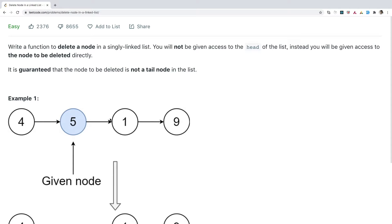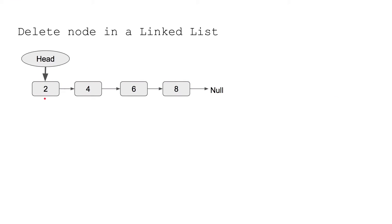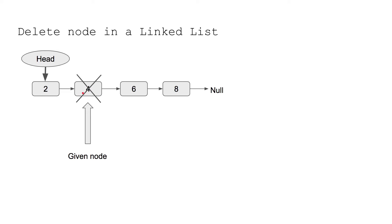Let's understand the solution through a presentation. Say you are given the linked list 2 → 4 → 6 → 8, and the node to be deleted is the node with value 4. We want to delete this node, and the only thing we have is access to this node — not the head node. Ideally, we should delete node 4 and make node 2 point directly to node 6.